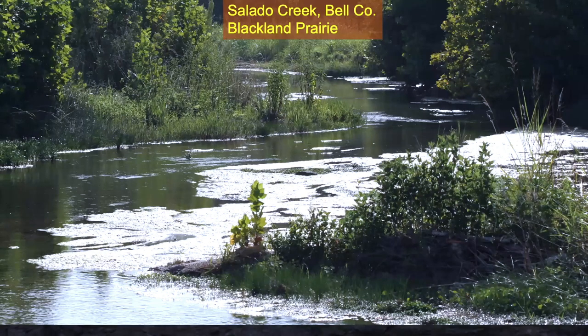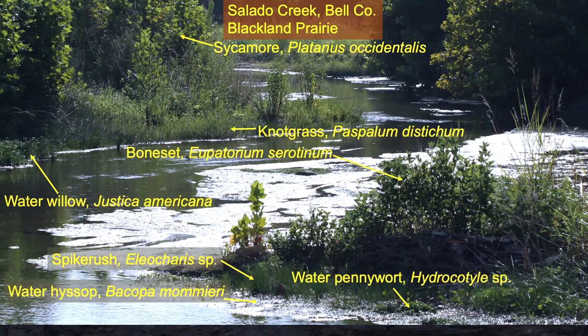Salado Creek — if you're going back north on the interstate, stop in and look at Salado Creek. It's a beautiful creek. It's in the blackland prairie but it looks like a Hill Country creek. Look at the plant diversity on Salado Creek. One of the problems though is it's in town in the village of Salado and a lot of the landowners mow right up against it, which is a problem.